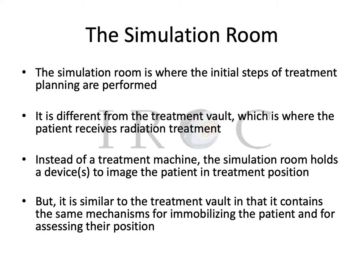The simulation room is where the initial steps of treatment planning are performed. It has features that are similar to the actual treatment vault and features that are different. Instead of housing a linear accelerator or other treatment machine, the simulation room holds the device to image the patient — often a CT scanner, an MR, or a PET-CT. However, it's similar to the treatment vault in that it contains the same mechanisms for immobilizing the patient and assessing their position.